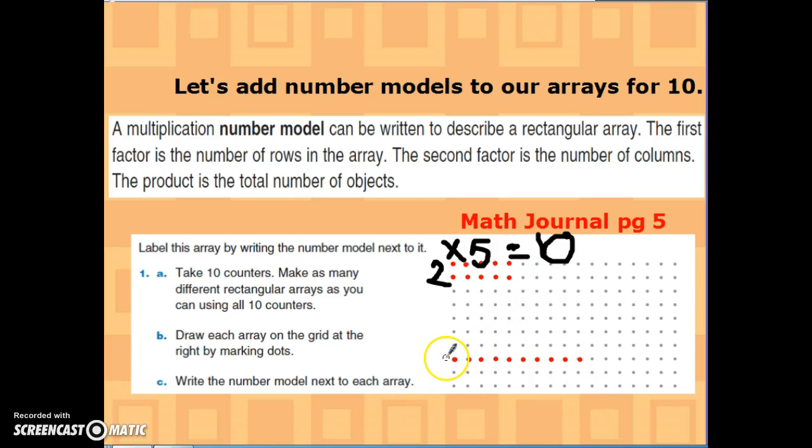All right. My other one, if I were going to write my number model, I have one row. I have ten in each row. And so now I'll put my multiplication symbol. My multiplication number model is one times ten equals ten. So you'll continue to do this with the other arrays that you make for ten.